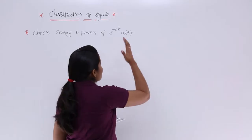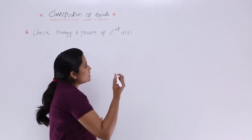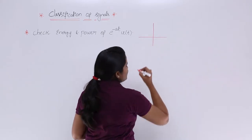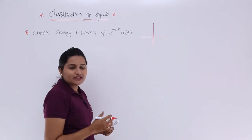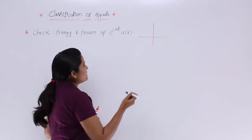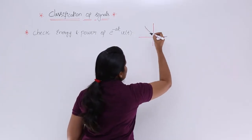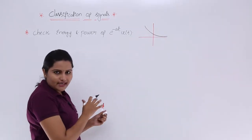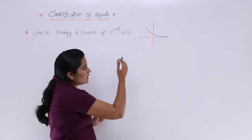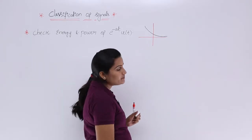Now you will see the structure of e^(-aT)u(T). As you know, an exponential signal with negative power is a decaying exponential. It starts at the negative x-axis and goes to plus infinity.